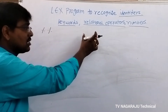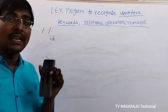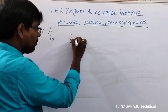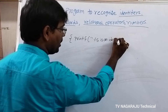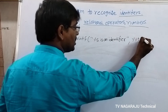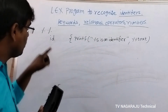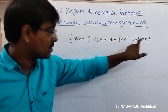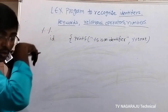The pattern is followed by a space and then the action, which is any C statement. For example, the pattern is 'id' and the action is: printf("%s is an identifier", yytext); Here yytext is a predefined keyword in the Lex program that holds the name of the matched token. For instance, if the identifier is 'Raju', then yytext contains 'Raju' and it prints 'Raju is an identifier'.